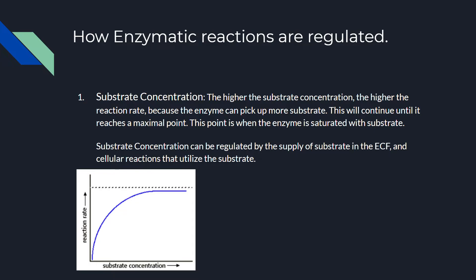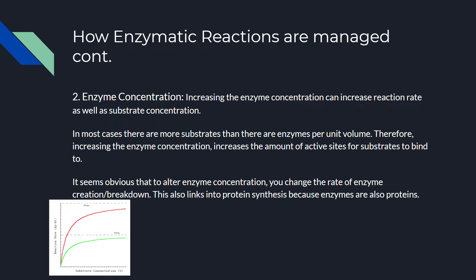Next, we'll look at enzyme concentrations. Increasing the enzyme concentration also increases the reaction rate. In most cases there are more substrates than enzymes, but when you add more enzymes, more substrates will be bound even if existing enzymes are full. The higher the enzyme concentration, the higher the saturation will be, because there are more enzymes and more active sites to bind. Enzyme concentration can be changed by the rate of enzyme creation or breakdown, and it's also linked to protein synthesis because enzymes are proteins.